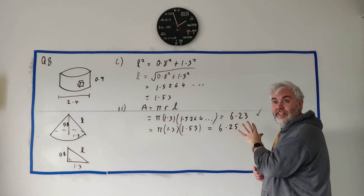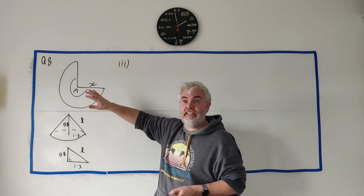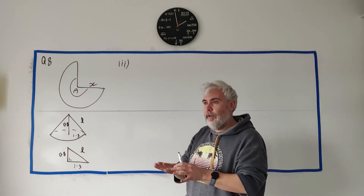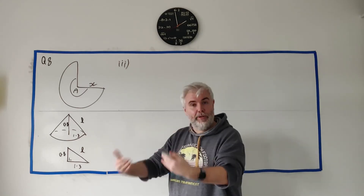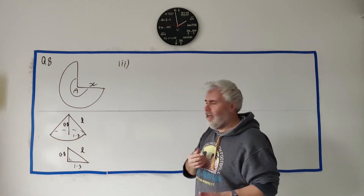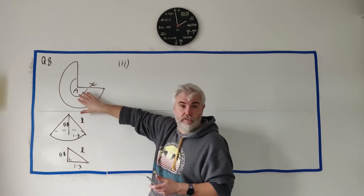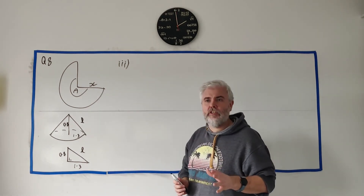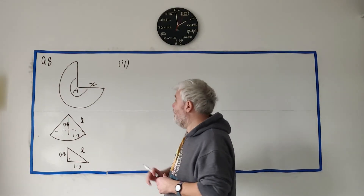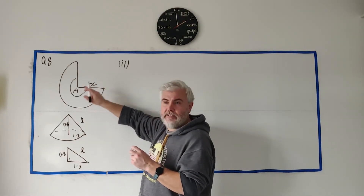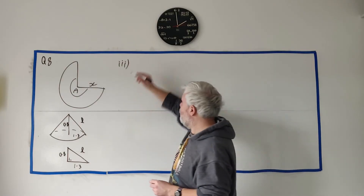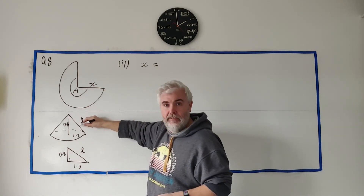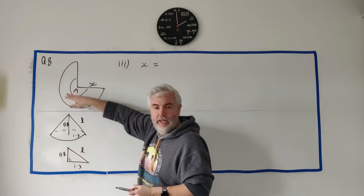In part three, they give us the cone unfolded into a two-dimensional shape — a sector of a circle. This is what a cone looks like laid flat: a circle with a portion cut out, which folds back into a cone. The question has two parts. First they ask us to write down x — and the clue is they give you no working room, because x is simply the slant height l, which is 1.53.